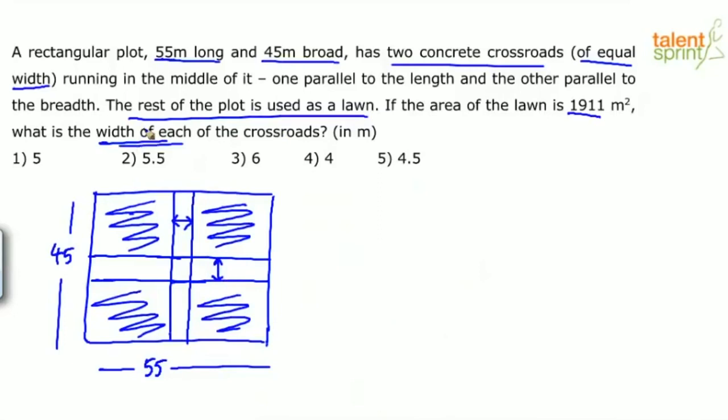Of course both the crossroads are of equal width, so we don't have to worry about two different widths here. First of all, let us find out the area of the crossroads. Area of the crossroads will be equal to area of rectangle minus area of lawn. From the total area of the rectangle, if we subtract the area of the lawn, we will get the area of the crossroads.